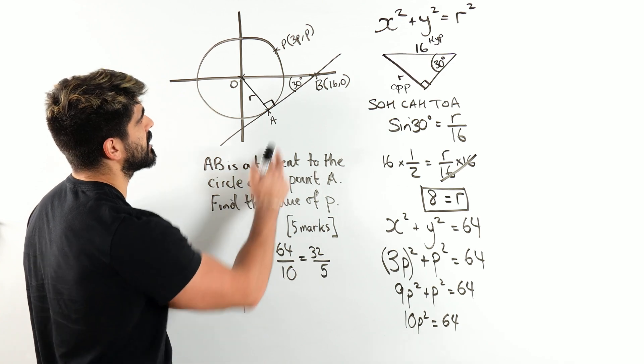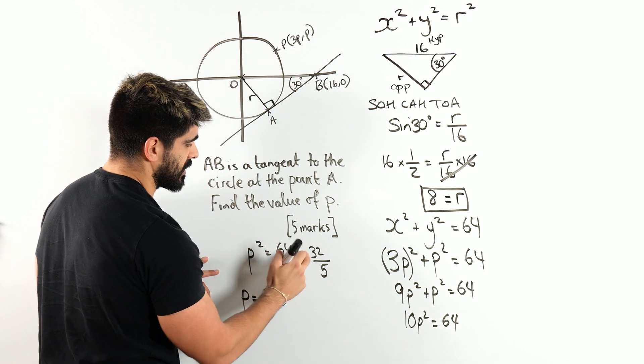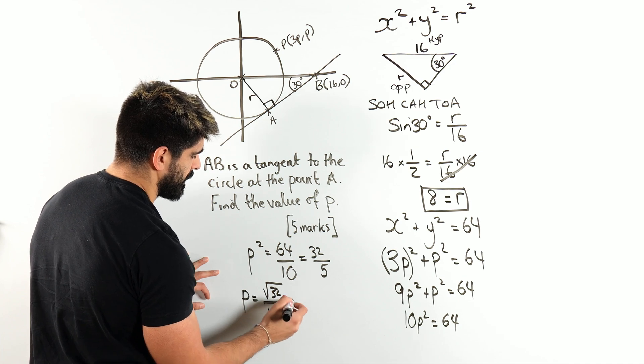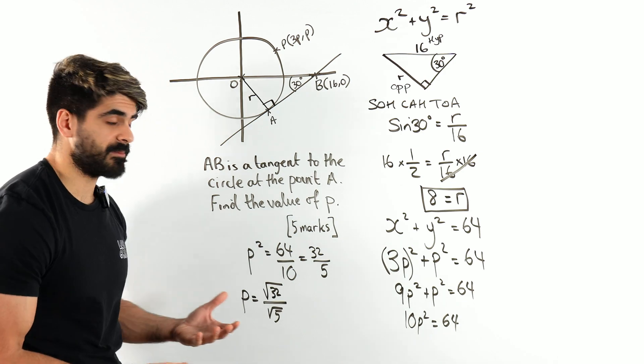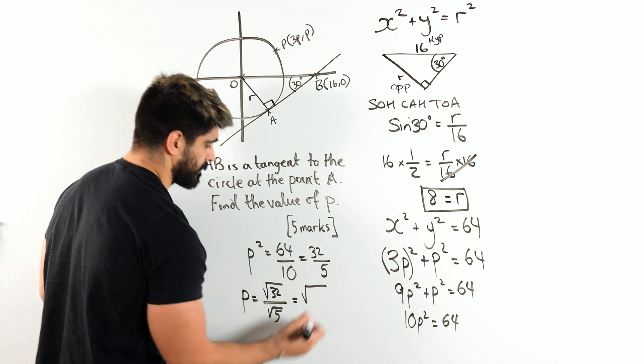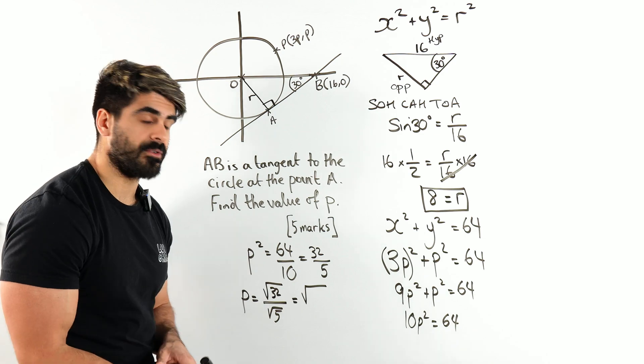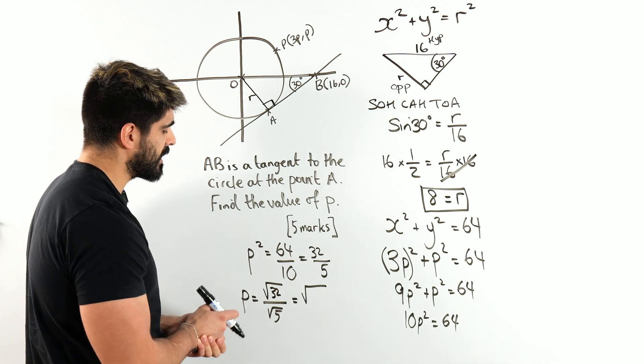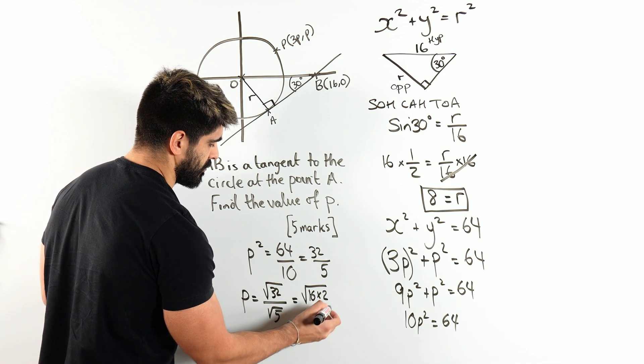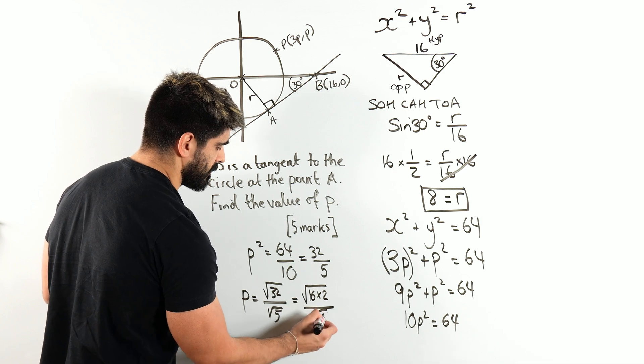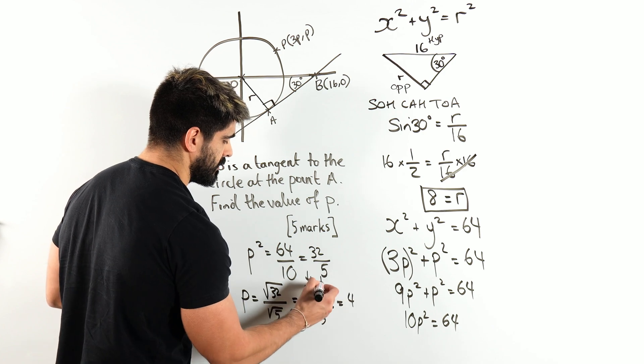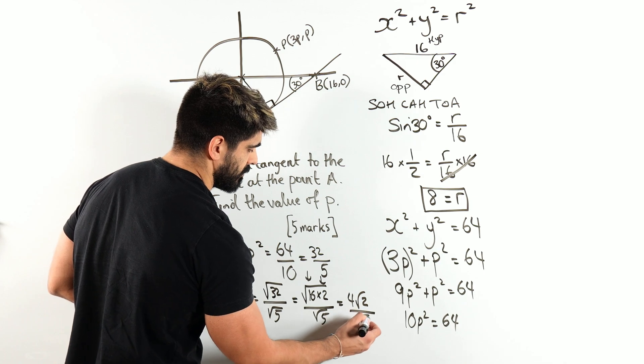So it's going to be root of 32 divided by root of 5. And this is not enough. We're going to have to simplify it. The first thing we do is I'm going to rewrite 32 as a square number times something else. So what square number goes into 32? It's 16. So it's 16 times 2 divided by root 5. Then we're going to root 16, which is 4. And then we get root 2, all divided by root 5.